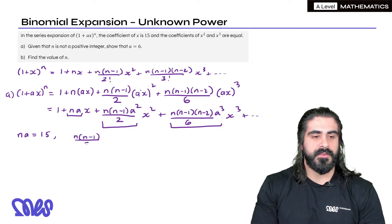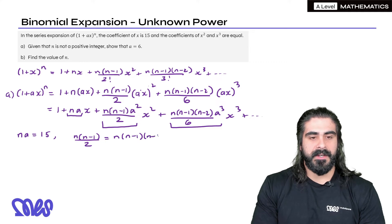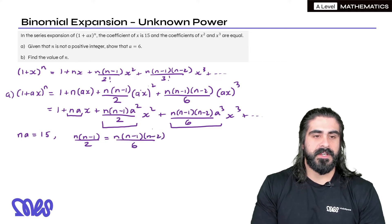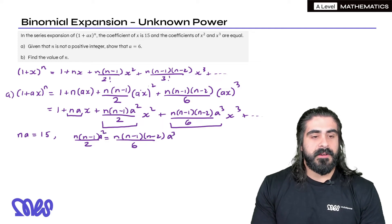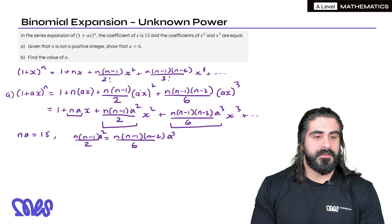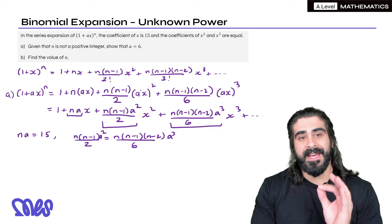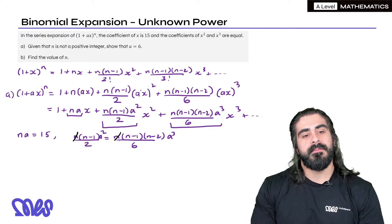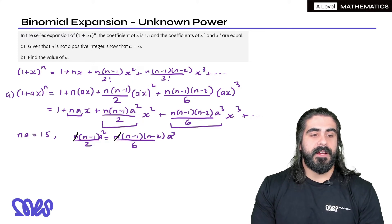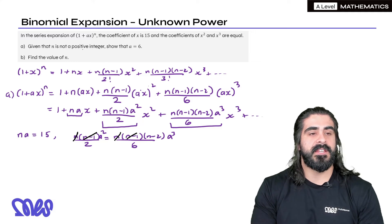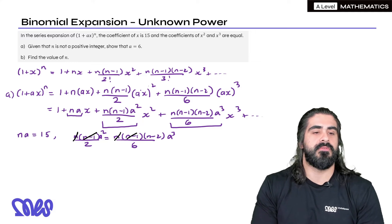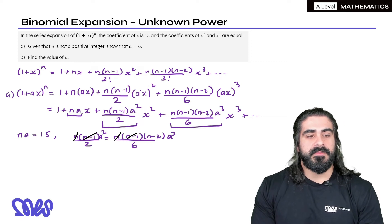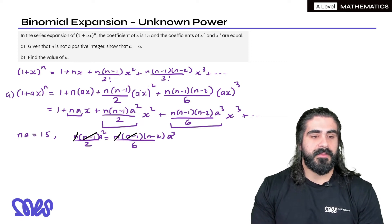n(n minus 1) over 2 a squared equals n(n minus 1)(n minus 2) over 6 a cubed. Now the good thing about these two is that we can actually cross things out on both sides. We can divide through by n because n is not 0 here. So n cannot be 0, so we can divide through by n. We can actually divide through by (n minus 1) because n cannot be 1. Yeah, it says n is not a positive integer, so n can't be 1, we can divide through by that. We can also divide both sides by a squared. So we can divide through by a squared. The squared would go and the cubed just becomes a.